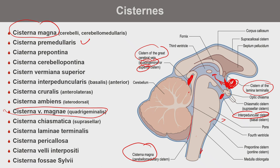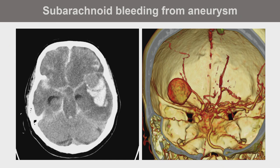CSF flows around the corpus callosum (cisterna pericallosa), into the cistern of the Sylvian fissure (covering the insular region), and along the gyri. Aneurysms are typically found in the interpeduncular and lamina terminalis cisterns — the lamina terminalis membrane can rupture from aneurysm-related pressure, allowing blood to enter the intraventricular system. CSF continues around the brain surface and is eventually resorbed in the arachnoid granulations.